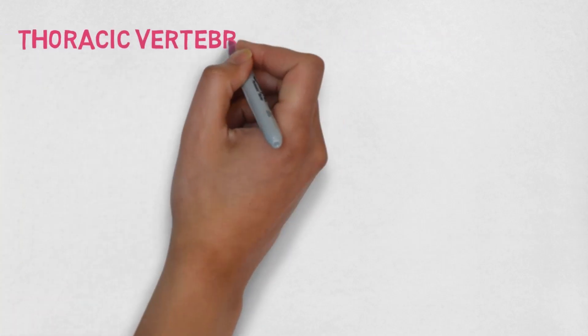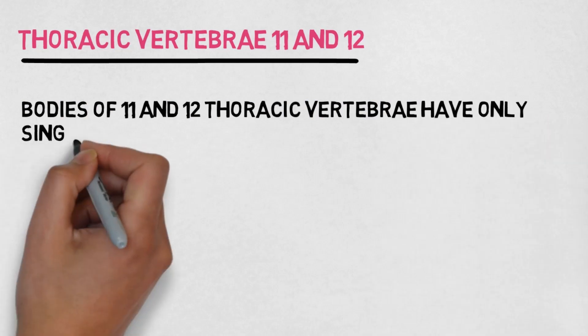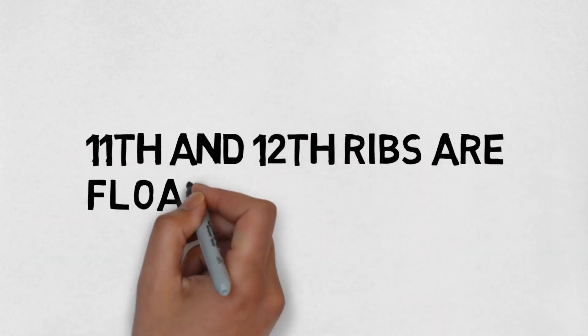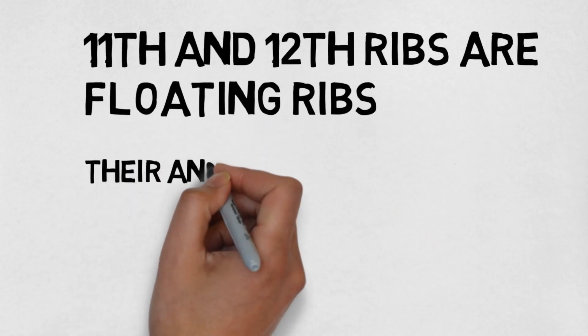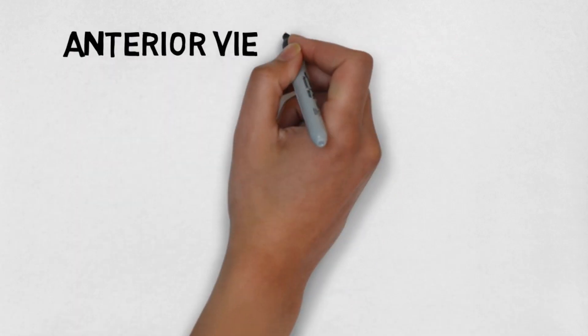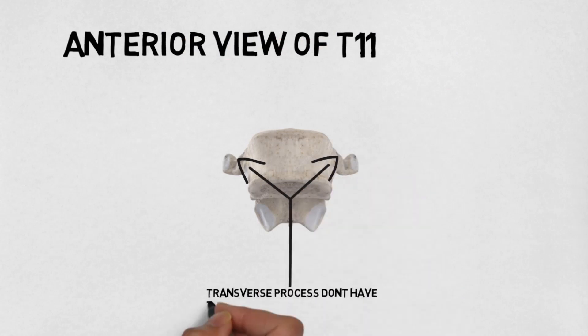After T10, we have thoracic vertebrae 11 and 12. The bodies of T11 and T12 have only single complete costal facets on each side. And the transverse processes of these vertebrae don't have transverse costal facets. Can you guess why? Because the 11th and 12th ribs are floating ribs, and the anterior ends of the 11th and 12th ribs are free. This is thoracic vertebra number 11 and this is the single complete costal facet. This is the anterior view of T11 — and as you can see, the transverse processes don't have transverse costal facets.